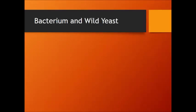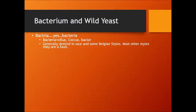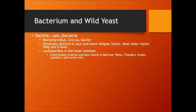During fermentation we sometimes also use bacteria and wild yeast — and don't be scared. If a culture name contains '-coccus' or '-bacter' at the end, that's usually some type of bacteria, like Lactobacillus, Pediococcus, or Acetobacter. These are generally desired in sour and some Belgian styles; in most other styles they are considered a fault. Lactobacillus is probably the most common, contributing an intense sourness, and is commonly found in Berliner Weisse, Flanders Red and Brown styles, lambics, and occasionally some Witbiers.